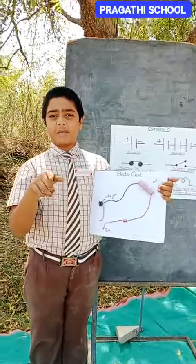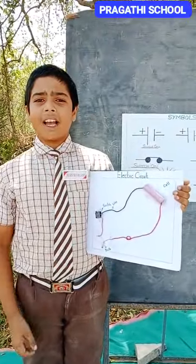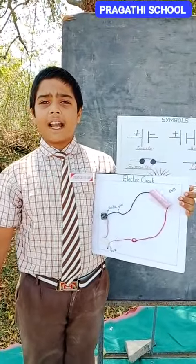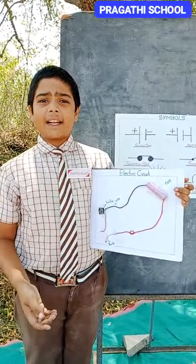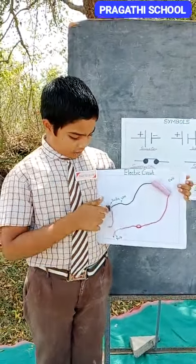Do you know what is meant by a bulb? A bulb is a device which glows or emits light when electric current is passed through it.